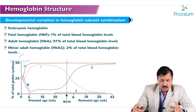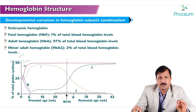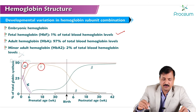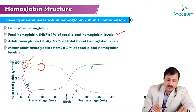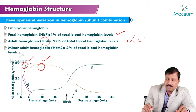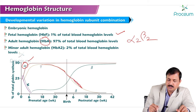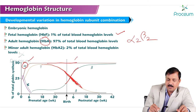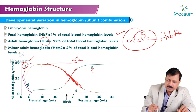Embryonic hemoglobin generally has ε₂ζ₂ subunit types. Fetal hemoglobin is predominant from 6 weeks prenatal life to 6 weeks postnatal life; its subunit combination is α₂γ₂. Adult hemoglobin, written as HbA, has an α₂β₂ subunit combination. As the gamma chain decreases from 30 weeks prenatal to 6 weeks postnatal life, the beta chain increases and combines with alpha chains to form α₂β₂ — adult HbA — from 6 weeks postnatal life onwards.